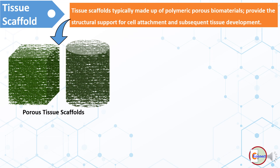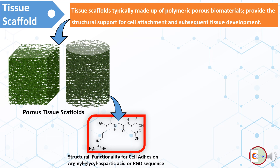Porosity is the essential property of tissue scaffolds, which can help in tissue regeneration by allowing cell migration through the scaffolds. It is preferable that the polymeric material used in fabrication of tissue scaffolds must have some functionalities or motifs responsible for cell adhesion — for example, arginyl glycine aspartic acid, or RGD sequence — which helps in tissue regeneration.